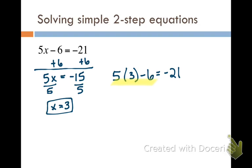So 5, parentheses, 3, parentheses, minus 6. You're going to get negative 21 equals negative 21. So we know our answer is right because we've checked it. You can do that with every equation that you solve.